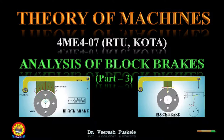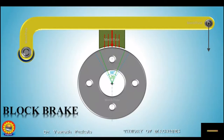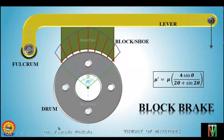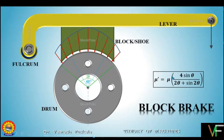Welcome to today's lecture on Theory of Machines. This is Part 3 of the lecture on analysis of block brakes. In the previous two lectures we discussed the pressure distribution for both cases of angle of contact: less than 60 degrees and greater than 60 degrees, and we also saw the equation of the equivalent coefficient of friction.